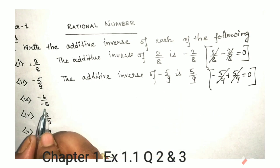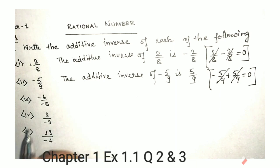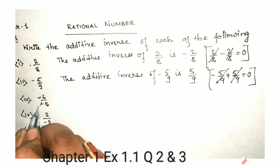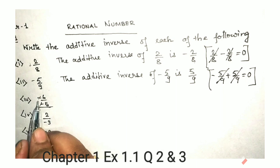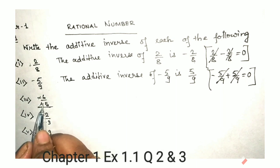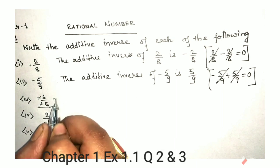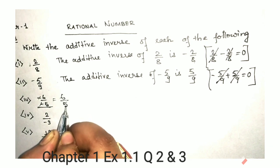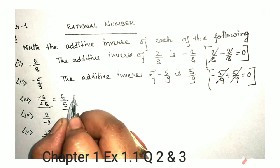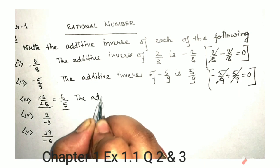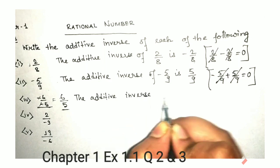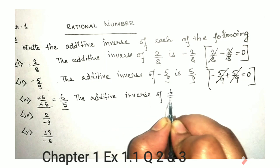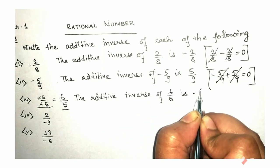Now in this sum we have minus 6 divided by minus 5. Here both signs are negative, so we can cancel them. First we will have to solve this one and then write the additive inverse. Since minus divided by minus gives plus, it will be 6 by 5. Now the additive inverse of 6 by 5 is minus 6 by 5.